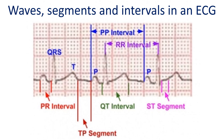The PR segment is between the P wave and the QRS complex, while the ST segment is between the QRS complex and the T wave. The TP segment is between the T wave and the next P wave, and is considered the true baseline in the ECG.